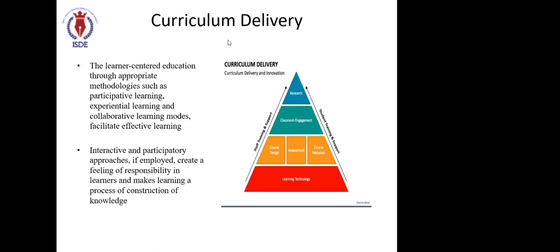Curriculum delivery is a very important aspect for faculty and for all of us. Whenever we deliver the curriculum, understand that the curriculum is framed by BOS — Board of Study — members, and it is delivered by faculties who may or may not be part of the BOS. Most of the time they are not. Are you having a mechanism so that once the syllabus is frozen and approved by the Academic Council, you give the right communication to your faculties about the expectations, discussion, and objectives of each unit?